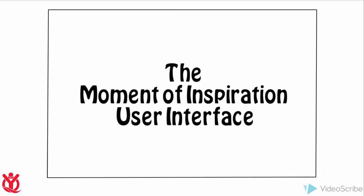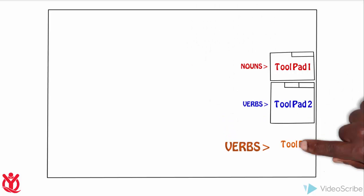We access these nouns and verbs using Moment of Inspiration's user interface. Let's take a look at the structure of Moment of Inspiration's interface. The first thing we need is some way to create nouns. That's where Toolpad 1 comes in. Toolpad 1 allows us to create nouns like circle, rectangle, and ellipse. Next, we need some way to select the verbs that we will combine with our nouns. Toolpad 2 contains simple verbs like copy and paste. Toolpad 3 contains the most important verbs like extrude and revolve.